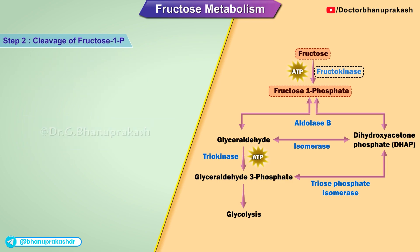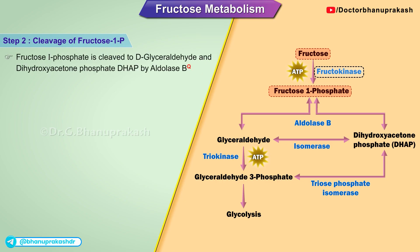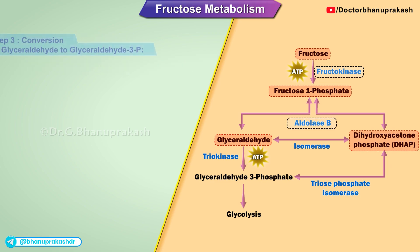Step 2: Cleavage of Fructose-1-phosphate. Fructose-1-phosphate is cleaved to D-glyceraldehyde and dihydroxyacetone phosphate (DHAP) by aldolase B. Step 3: Conversion of glyceraldehyde to glyceraldehyde-3-phosphate.